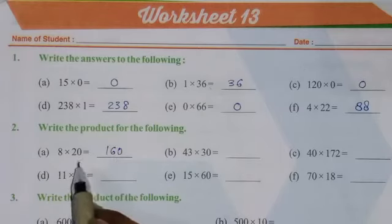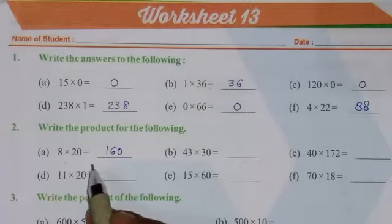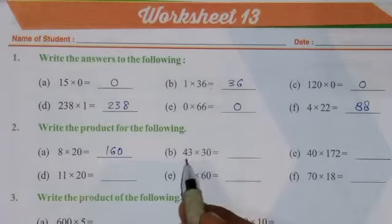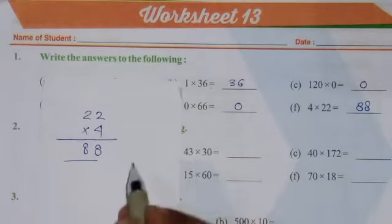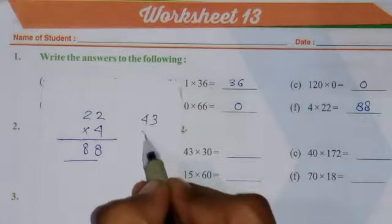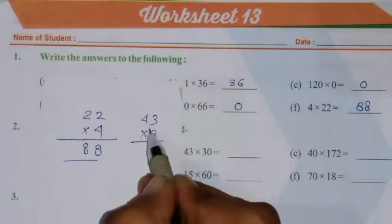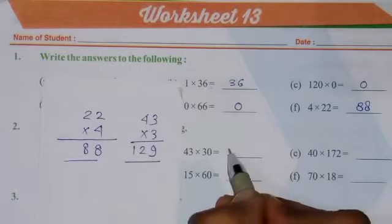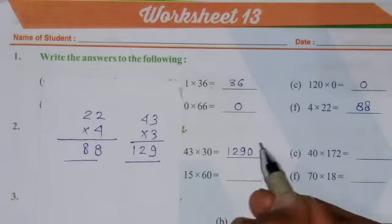If there is given a 0 at 1's place or 1's and 10's place, then we have to multiply first the remaining numbers, and then we will put the 0's. Just like this number - this is given 43 multiplied by 30. So we will multiply 43 by only 3. 3 times 3 is 9, and 3 times 4 is 12, so 129. And this 0 we will put here.